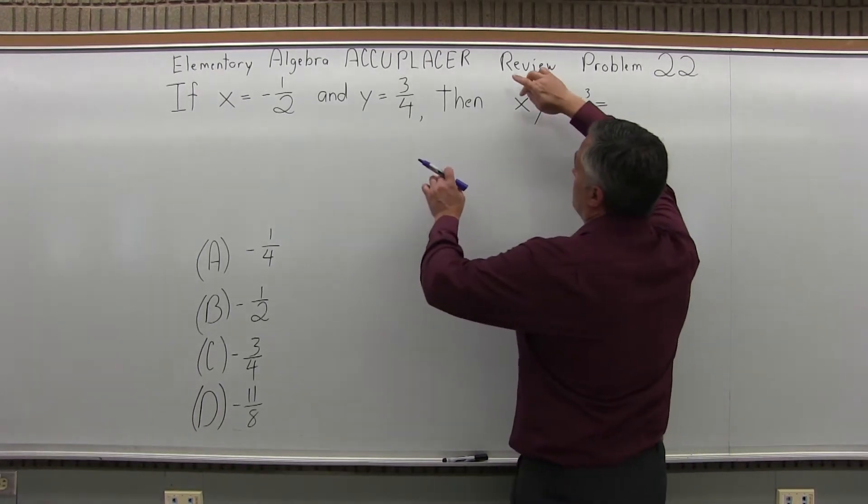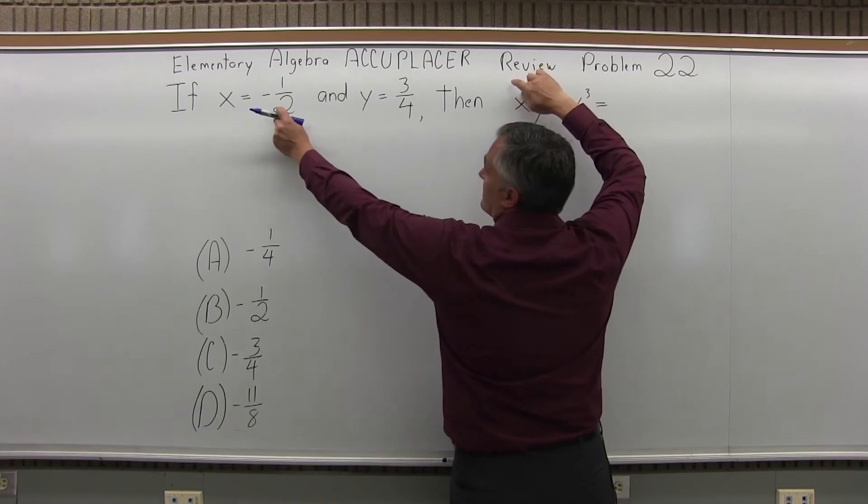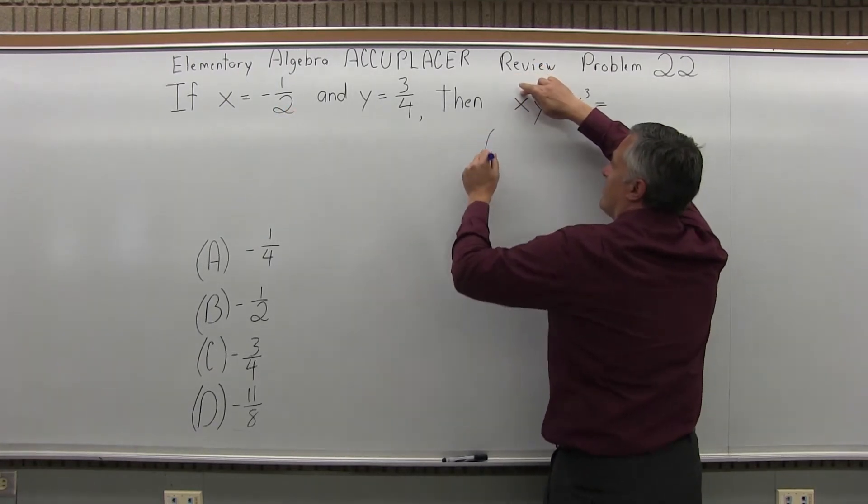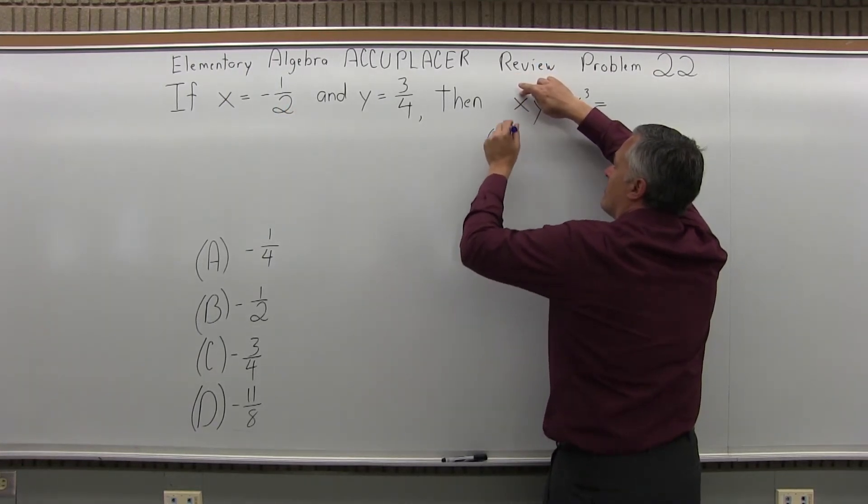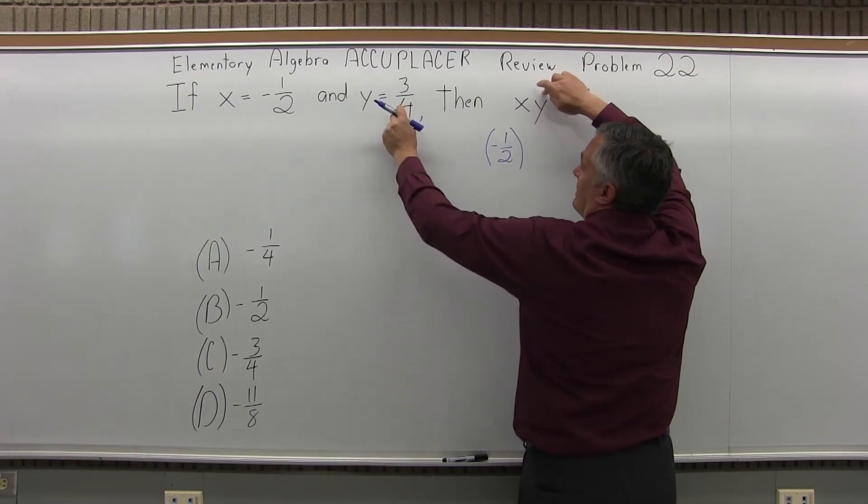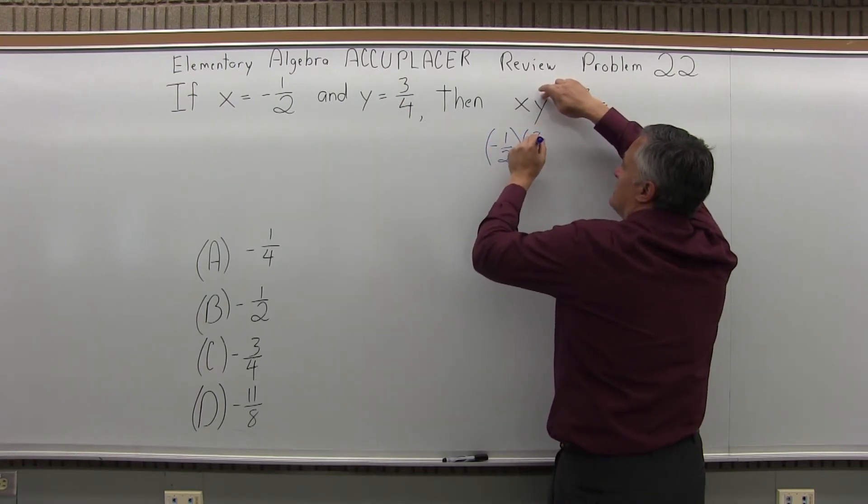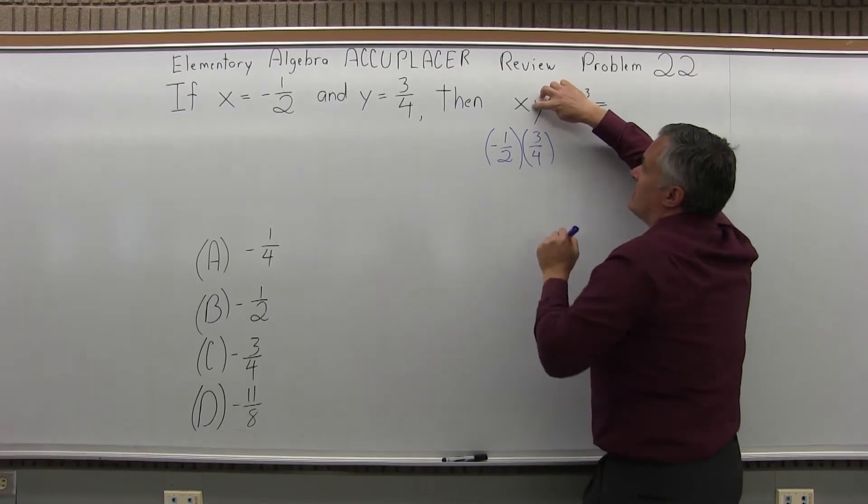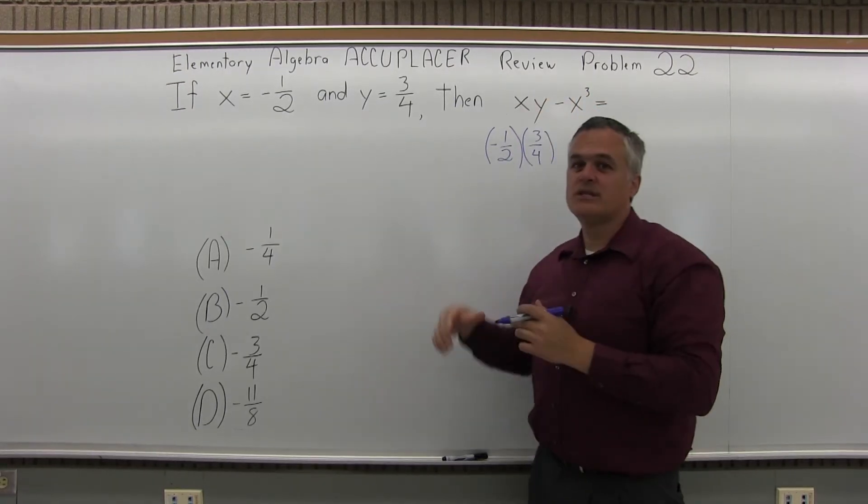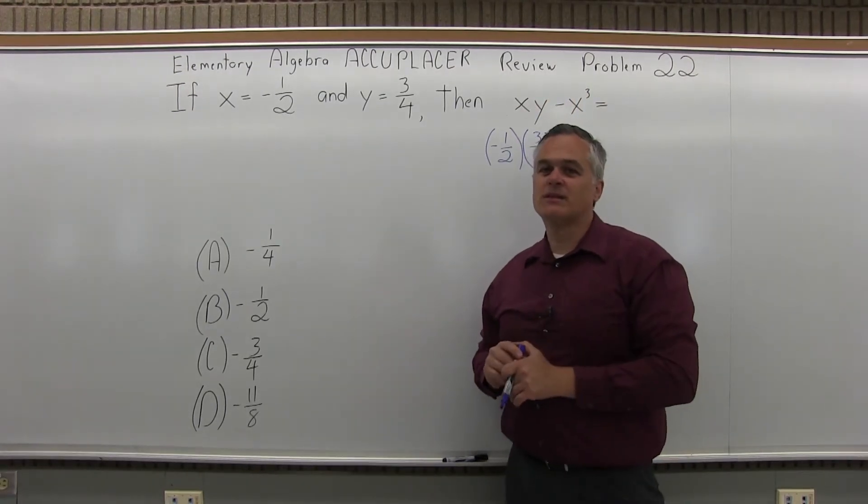So let's put in the numerical values. Let's start with x, x is negative one-half times y, y is three-fourths. Notice they don't really indicate an operation between the x and the y. If you don't see anything written it's implied that it's multiplied.